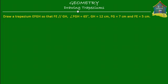Welcome to homecampus.com.sg. In this lesson we'll learn how to draw trapeziums. We'll draw a trapezium EFGH so that FE is parallel to GH and angle FGH is equal to 65 degrees.